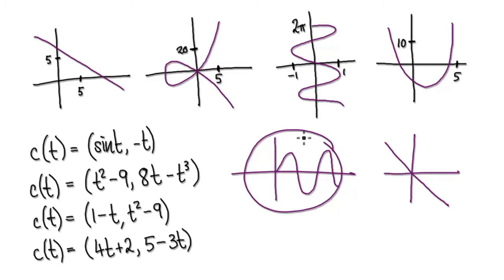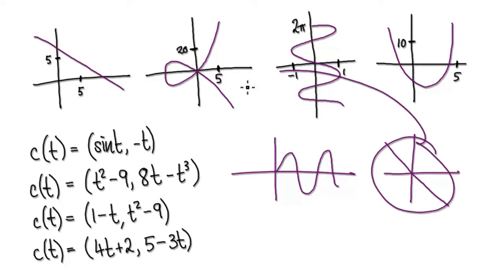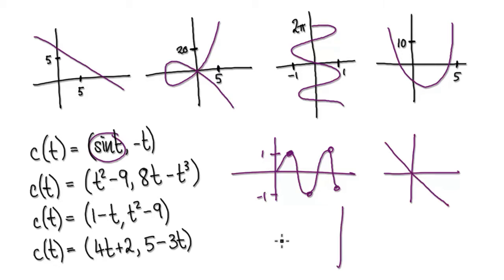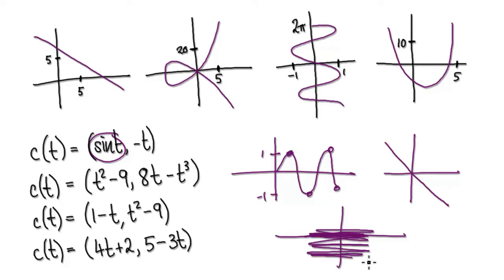This thing here tells you the x location, this thing here tells you the y location. So when you look at the x location, the x location will either be 1, or it will be negative 1, or 1, or negative 1. So what this is telling you is that in the x location, it's going to oscillate back and forth in the x direction.